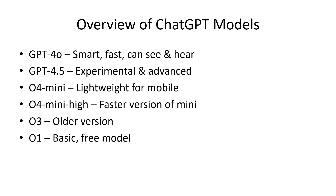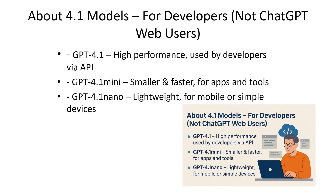The overview of ChatGPT models. There are different versions of ChatGPT — the newer ones are smaller and faster. GPT-4o (Omni) is the most advanced for most users, but there are several others listed as well. There are also some 4.1 models designed for developers, not ChatGPT web users. These newer models are designed for software developers who build apps using AI, and they aren't available on the regular ChatGPT website.